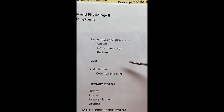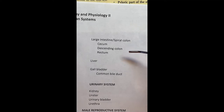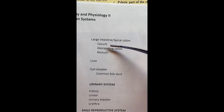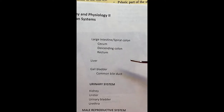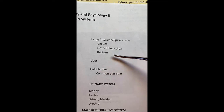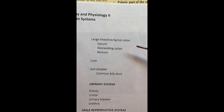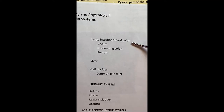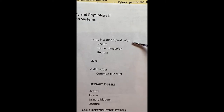The large intestine in a pig is shaped differently from humans. It has an area called the cecum, which we also have, a descending colon, and a rectum which leads to the anus. The middle portion wraps around in a sort of a spiral — hence the name spiral colon — where in humans we would have an ascending and transverse colon. In the fetal pig you'll see a spiral portion instead.